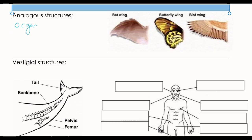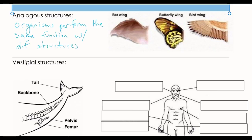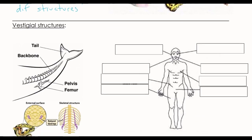So next is an analogous structure. What that is, is when organisms perform the same function but they have different structures. You can see here looking at a bat — a bat's bones kind of fan out and a bird has bones at the top. So they all perform the function of flight, but they have different structures on the inside while doing the same thing.